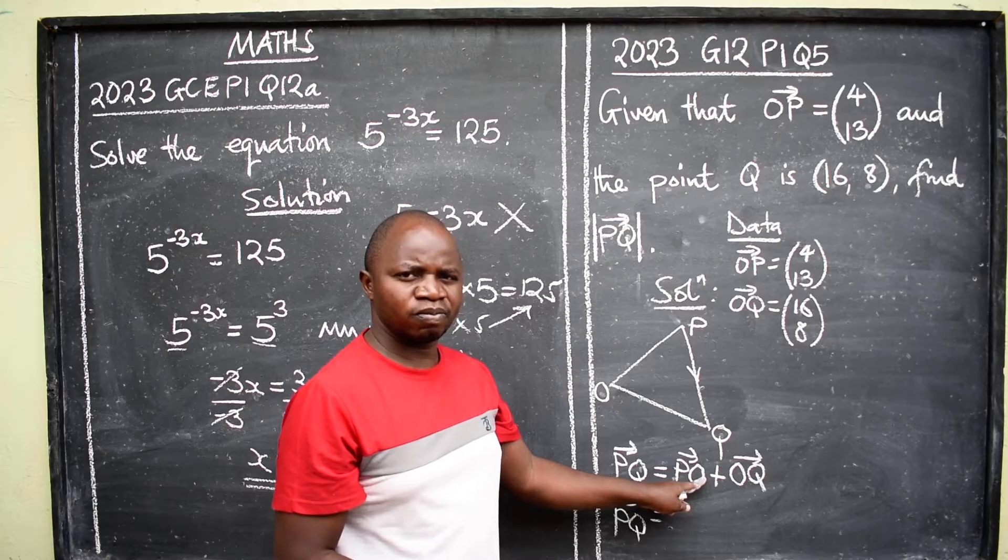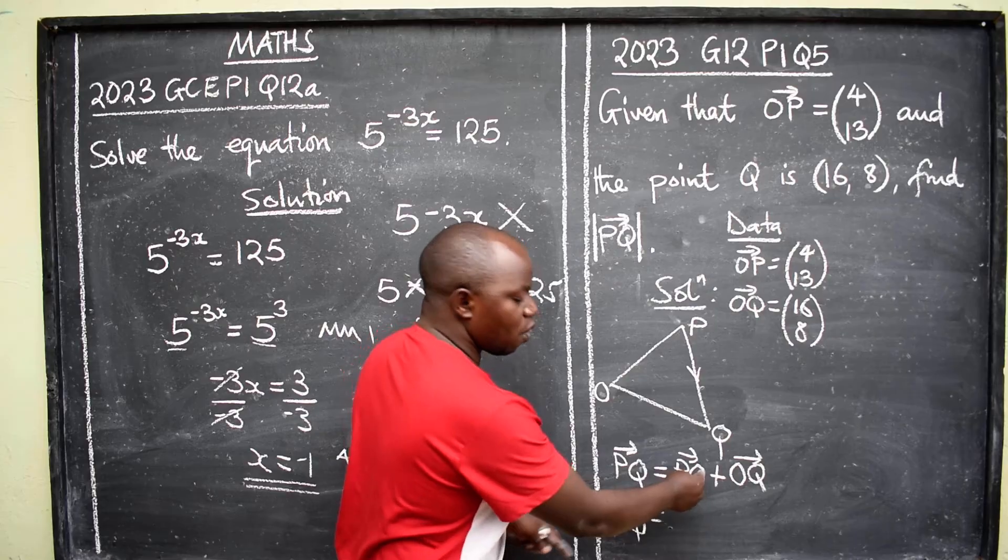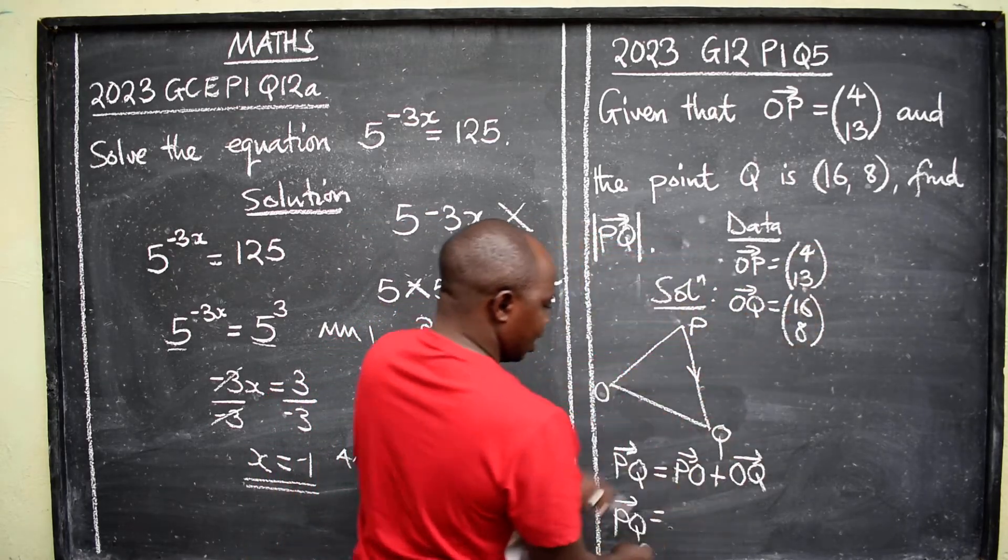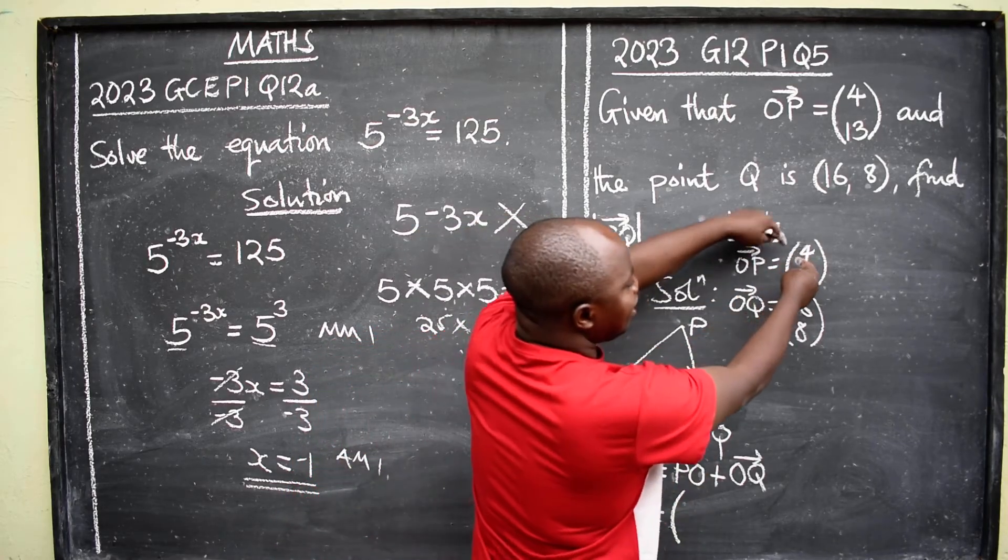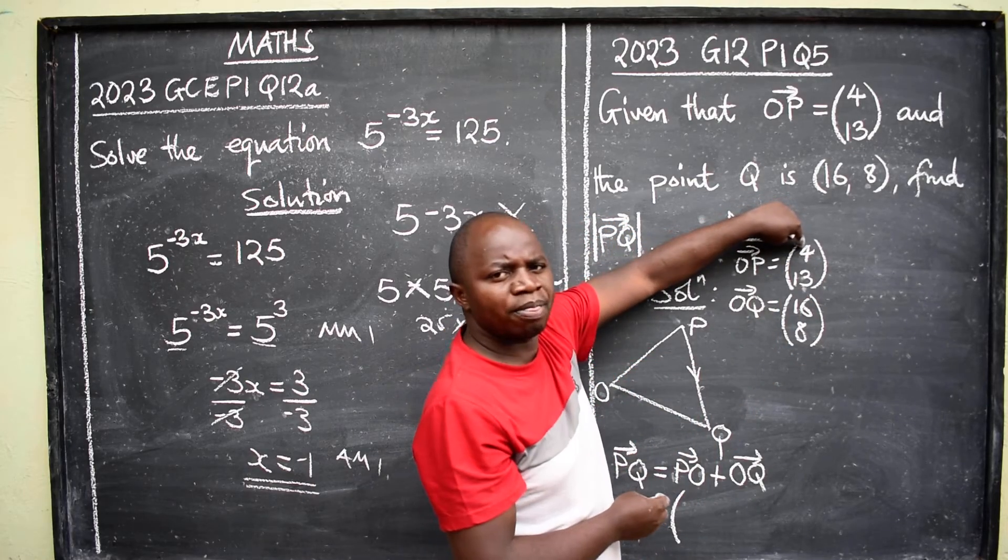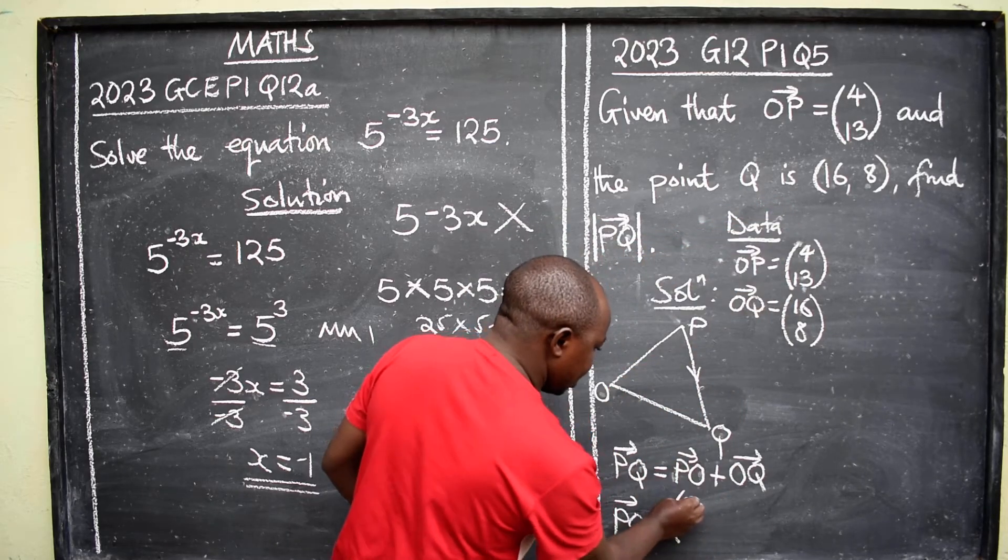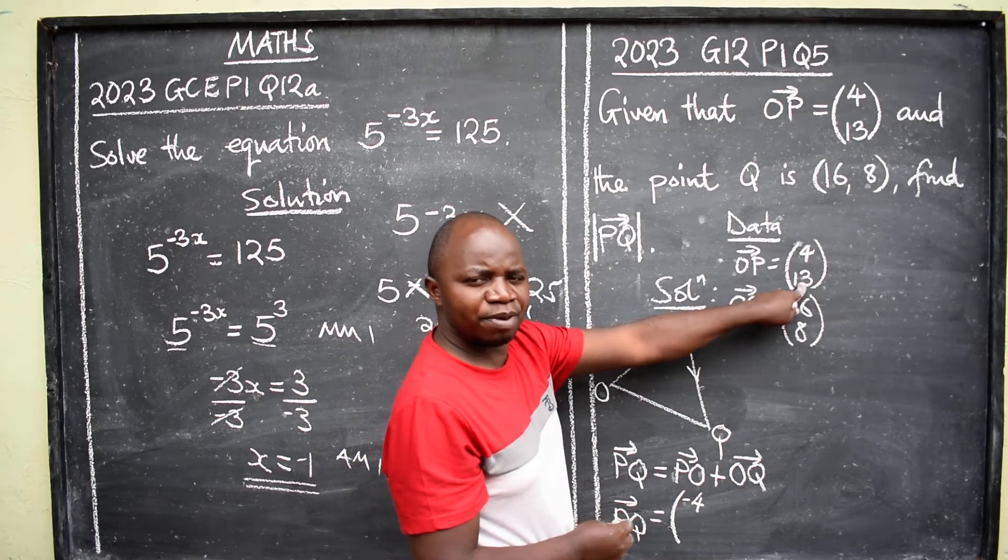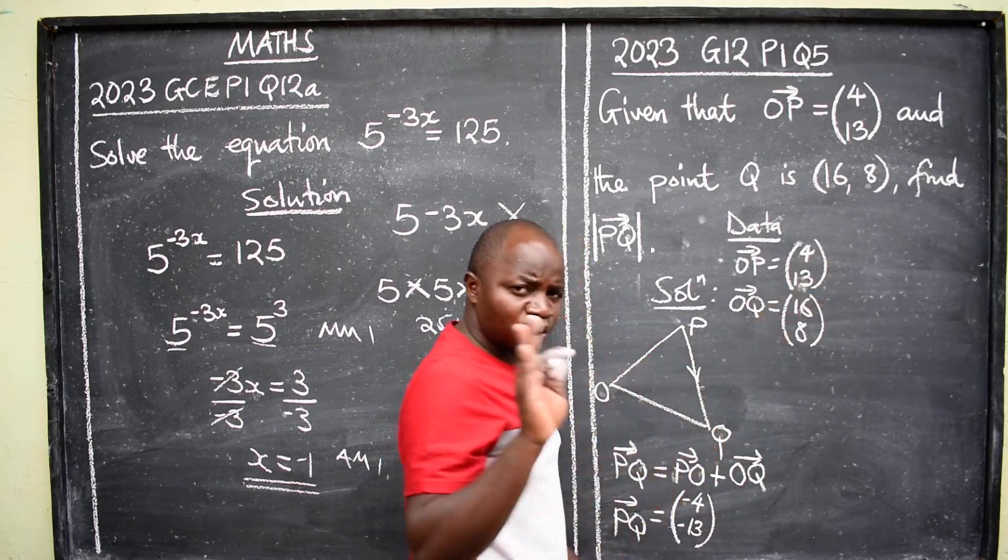What next? Substitute. PQ will be equal to, what is our PO? Go back to the data. We have OP, therefore PO is opposite. Since OP is 4, 13, therefore PO will be, these are positive, so the opposite will be negative 4, negative 13. Do not swap them.